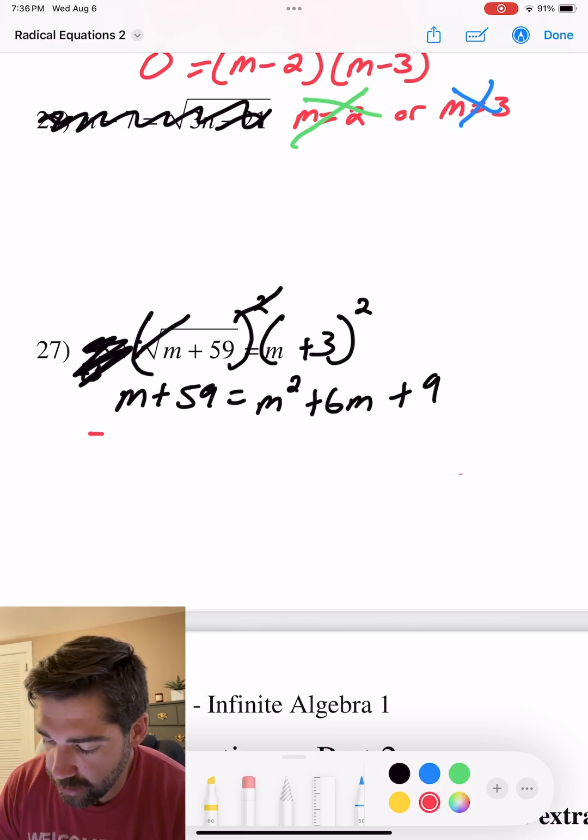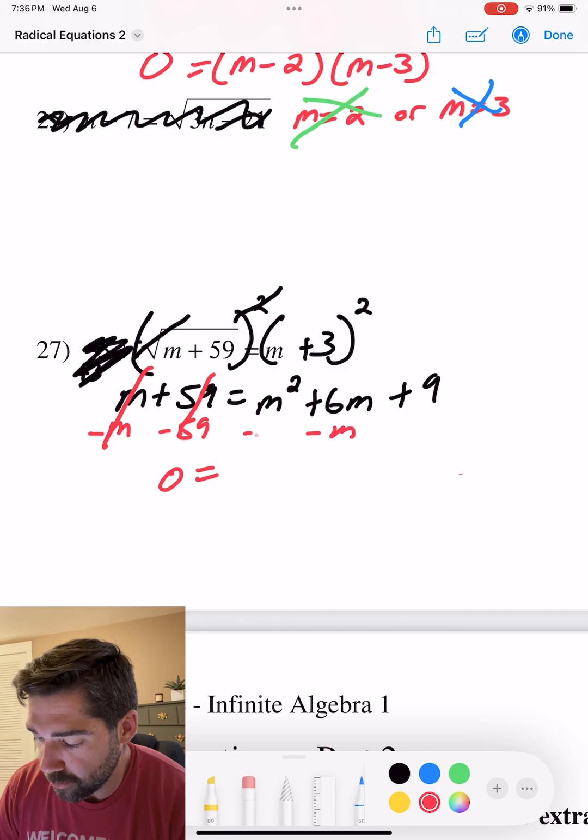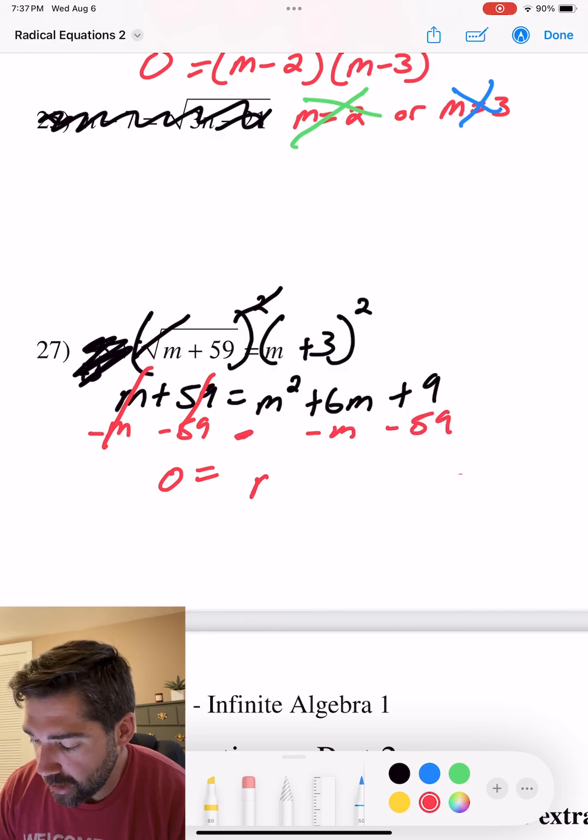Now let's subtract this side to get everything on one side, so we can get 0 equals. I'm going to subtract m from here. Not there. Subtract 59 from here. And I get m squared. This is a positive 5m and a negative 50.